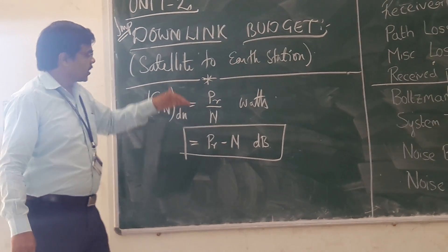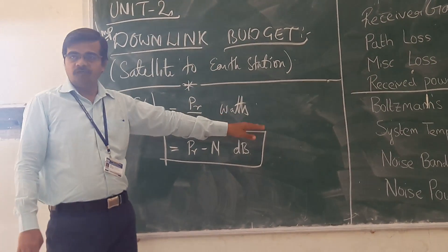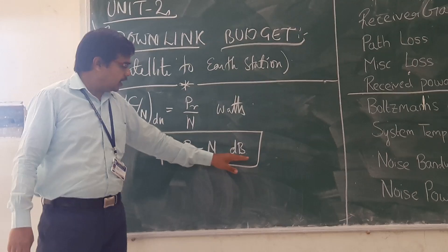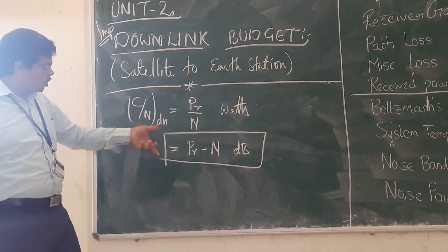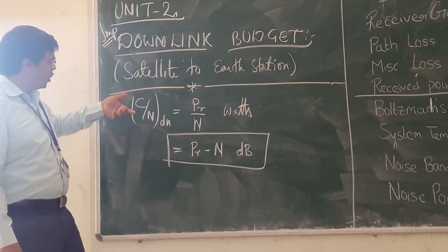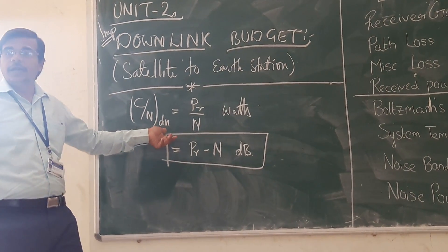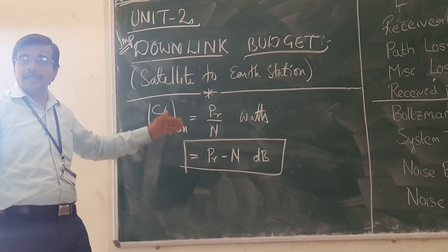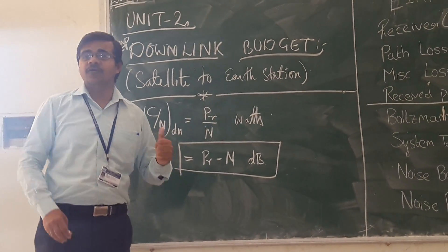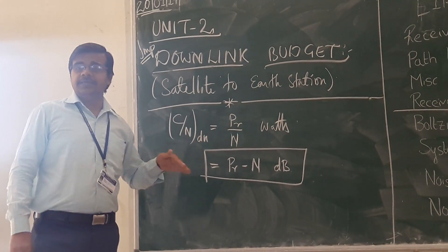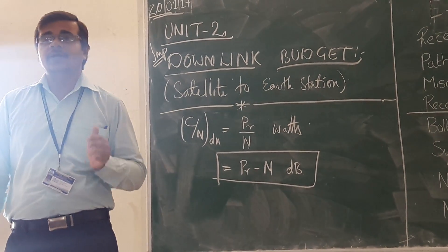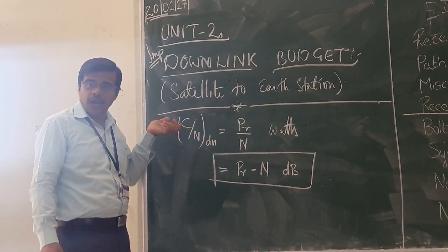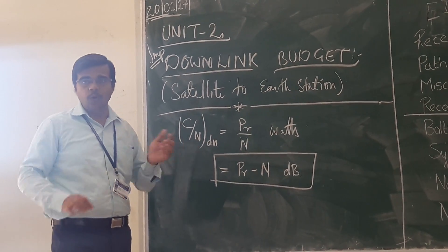The carrier-to-noise ratio calculated here is for the downlink. Earlier we calculated the carrier-to-noise ratio for the uplink. If you have both the uplink C/N and downlink C/N, you can then calculate the overall carrier-to-noise ratio.